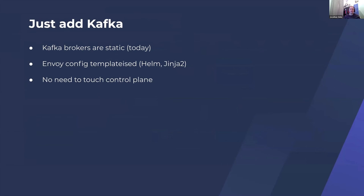Since the Kafka brokers are static we didn't even need to touch the control plane. Envoy configs are templatized — Helm for Kubernetes and Jinja2 for everything else. By having a static list of Kafka brokers for each cluster we can feed that into the templating and produce bootstrap configs which already know about all the brokers. Static configuration is not ideal, but it was an easy way to get started and get it into production while avoiding touching the control plane.